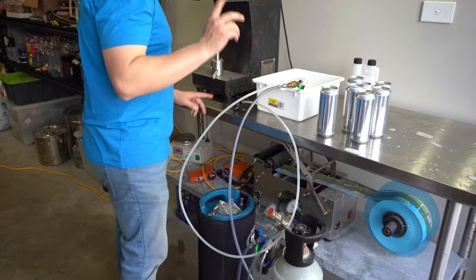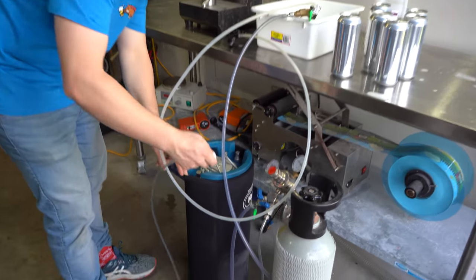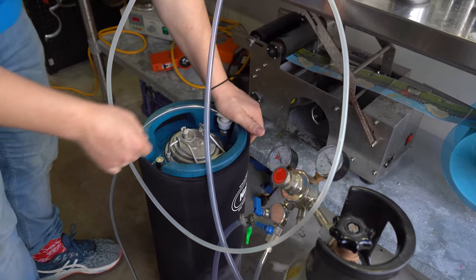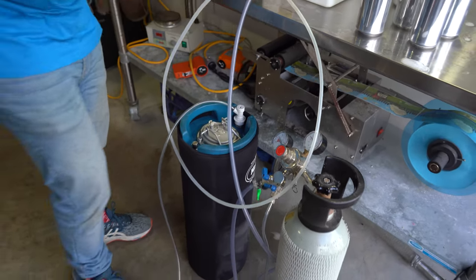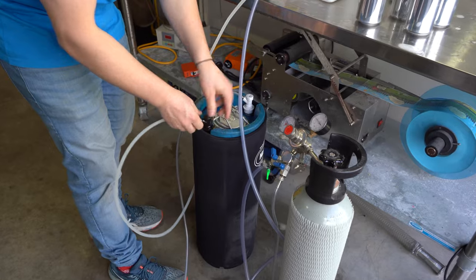We're now going to connect our gas line to our keg itself. We'll just connect that onto there. So we've got our gas connected, now we need to connect to the beer line. So we'll connect that onto there.